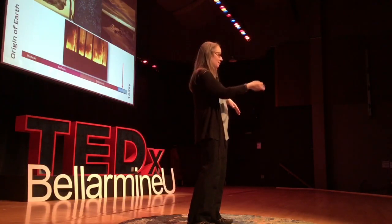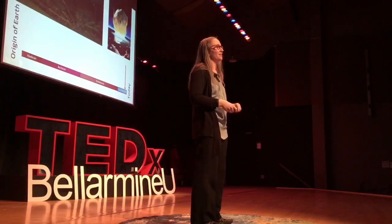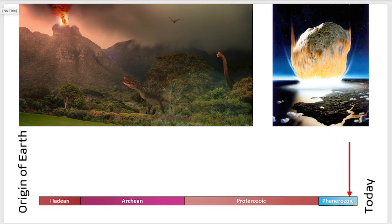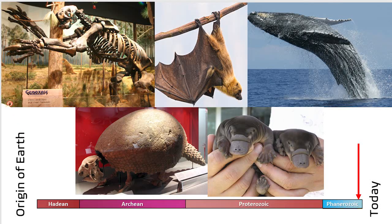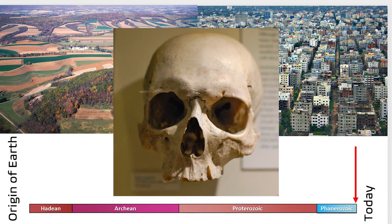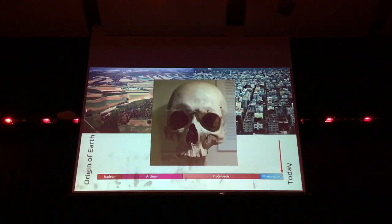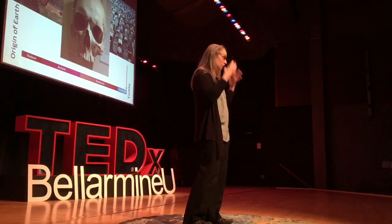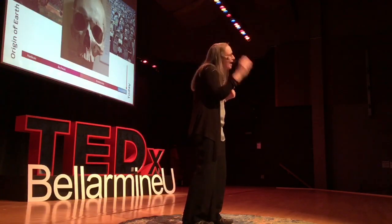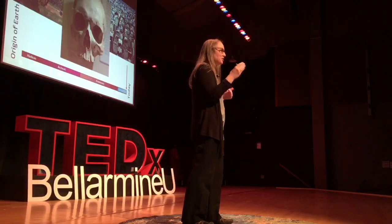Moving forward into the time of the dinosaurs — two mass extinctions affected them: one triggered by volcanoes, and then the one that wiped them out entirely, the Cretaceous extinction with the asteroid impact. After that we have the wild and wonderful world of mammals: whales, bats, giant armadillos, giant ground sloths, and of course the egg-laying platypus. But when we think about mammals, usually what we think about is ourselves. We often put ourselves at the center of existence, even though we're part of this grand sweep of time. We're not necessarily the end point of geologic time — we just happen to be at the present day.